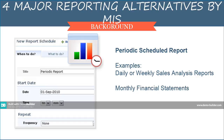Now I'll be discussing the four major reporting alternatives by MIS. First is the Periodic Scheduled Report, which is a pre-specified format designed to provide managers with information on a regular basis. Examples include daily or weekly sales analysis and monthly financial statements.